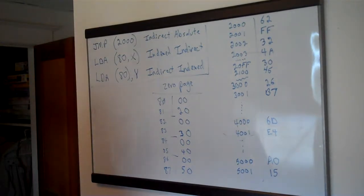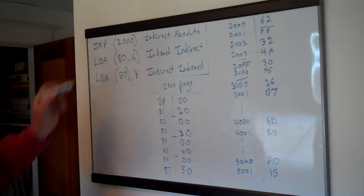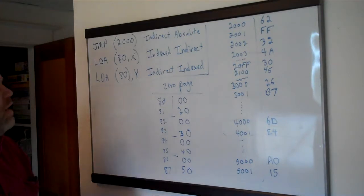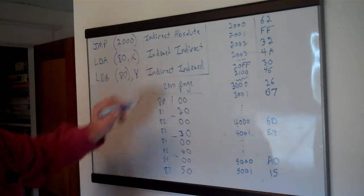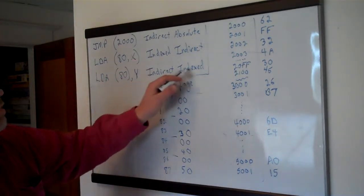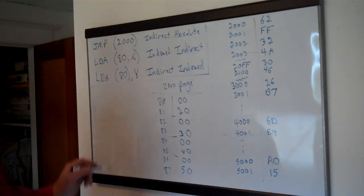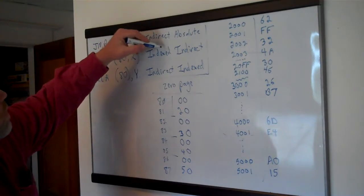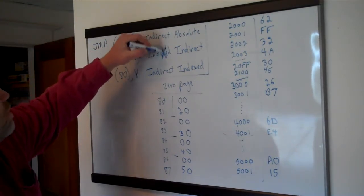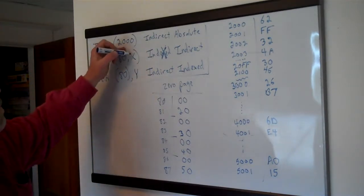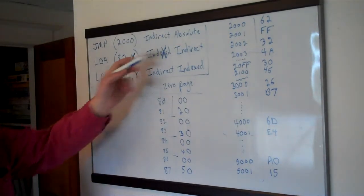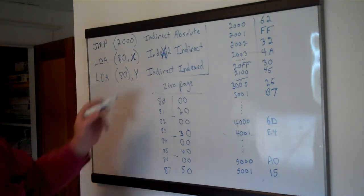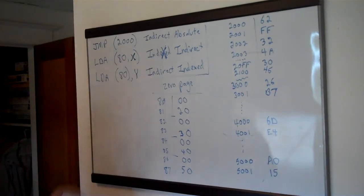That's the jump indirect. Let's move on to the second one — this is almost never used, but we'll talk about it anyway; it is used some in the Commodore kernel. We call it indexed indirect, which can be a little confusing because the next one is called indirect indexed. A way to remember: indexed comes first in the one that uses X. This one only works with X as the index, and the next one only works with Y.